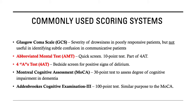Here are some of the commonly used scoring systems to assess the degree of confusion. The GCS is useful to assess the severity of drowsiness and poorly responsive patients, but it will not be useful in identifying subtle confusion in communicative patients. Useful quick bedside tests would include abbreviated mental tests, which form part of your 4AT test — a good bedside screen of delirium in elderly patients. More lengthy exams are the MoCA and the Addenbrooke's score, which assess the degree of cognitive impairment and are particularly useful in patients with dementia.